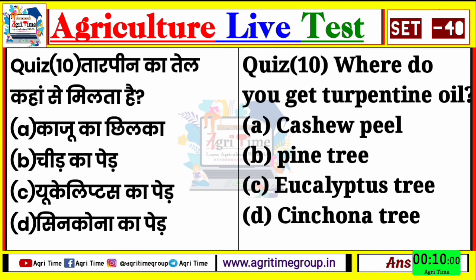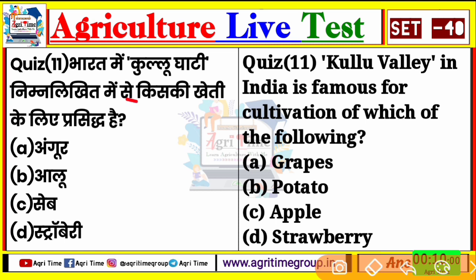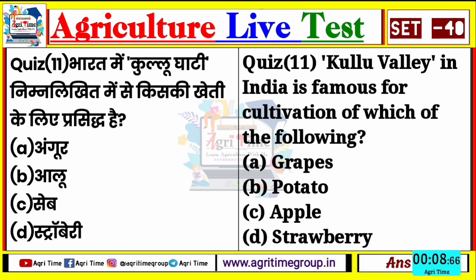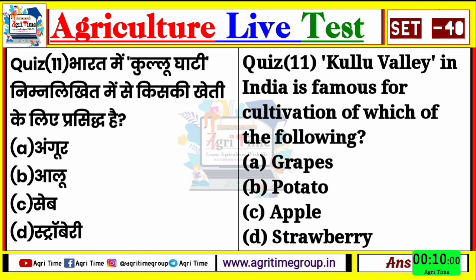Question number 11 ये रहा आपके screen पर - भारत में कुल्लू घाटी निम्नलिखित में से किसकी खेती के लिए प्रसिद्ध है? Kullu valley in India is famous for cultivation of which of the following? Options दिये: अंगूर, आलू, सेब और स्ट्रॉबेरी। Quiz 11 का right answer होगा option number C - सेब, यानि कि apple के लिए जो कुल्लू घाटी है, ये apple की खेती के लिए प्रसिद्ध है भारत में।